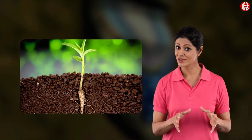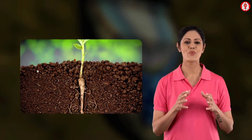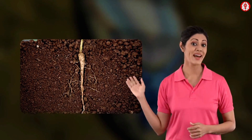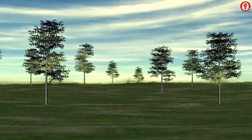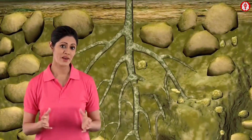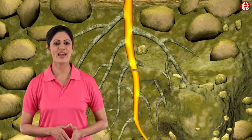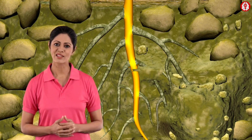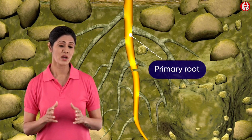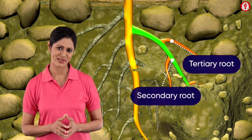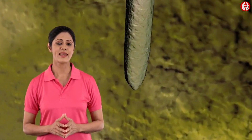There is a lot more to roots than meets the eye, and to properly understand plants we must learn about the anatomy of their roots. The plants we see around us remain anchored to the soil with the help of roots. The main root in the root system is called the primary root, and the other roots originating from it are the secondary and tertiary roots.